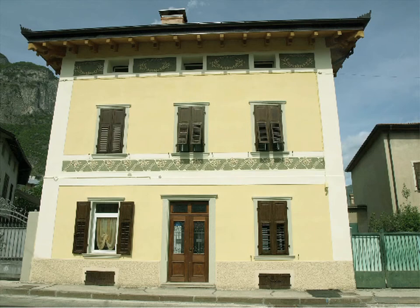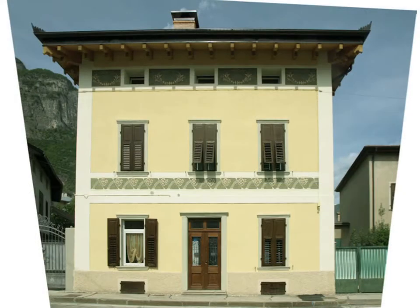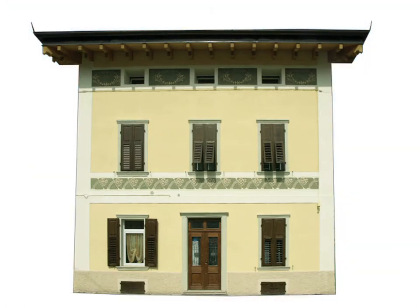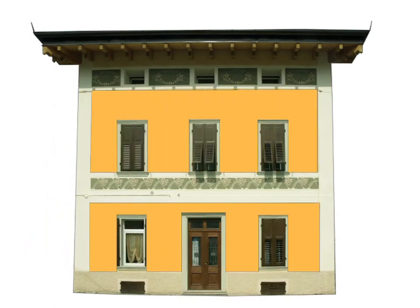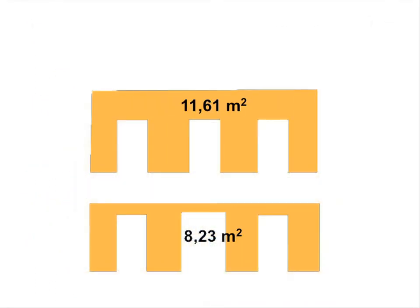Let's look at some practical applications of photograph straightening. Once the image has been straightened, it can be cropped and used as the building facade, or as in this case, you can calculate the surfaces to be repainted by simply drawing fills.